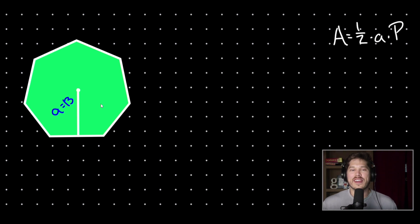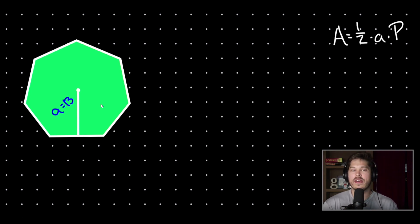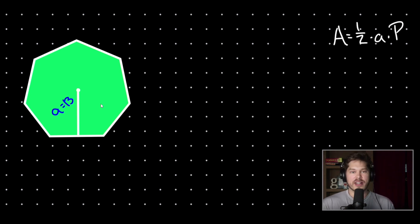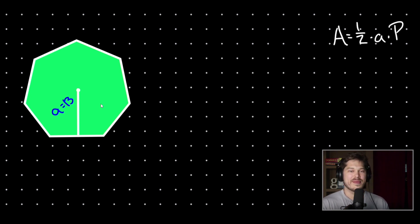How do you find the area of a regular polygon given only the shape's apothem? In this example, we have a regular heptagon — a seven-sided polygon — and we're given that the apothem is equal to 13. So how can we solve for this shape's area?